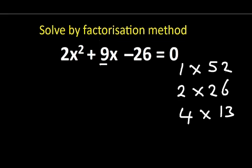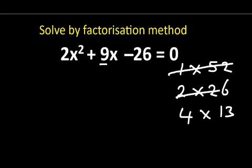Starting with 1 and 52: 1 plus 52 is 53, and 52 minus 1 is 51 — this is not going to work. If you add 2 to 26 you get 28, and if you subtract you get 24 — this is not going to work. If you add 13 to 4 you get 17, but if you subtract 4 from 13 you get 9, exactly what we are looking for.